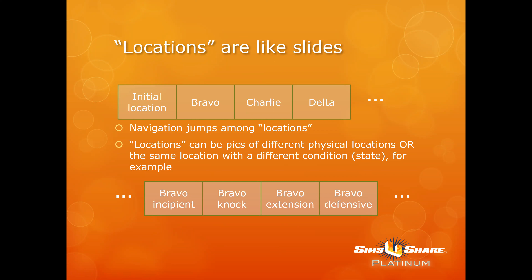Locations don't just have to be distinct physical spots. A location can be the same physical location with a different condition or different state. So you can make a location for Bravo incipient, Bravo knockdown, Bravo extension. As you create your states, you're going to have to create the conditions — how they look for the different states. You define: I want to do incipient, I want to do knockdown, and I'll need alpha, Bravo, Charlie, Delta with those particular conditions.